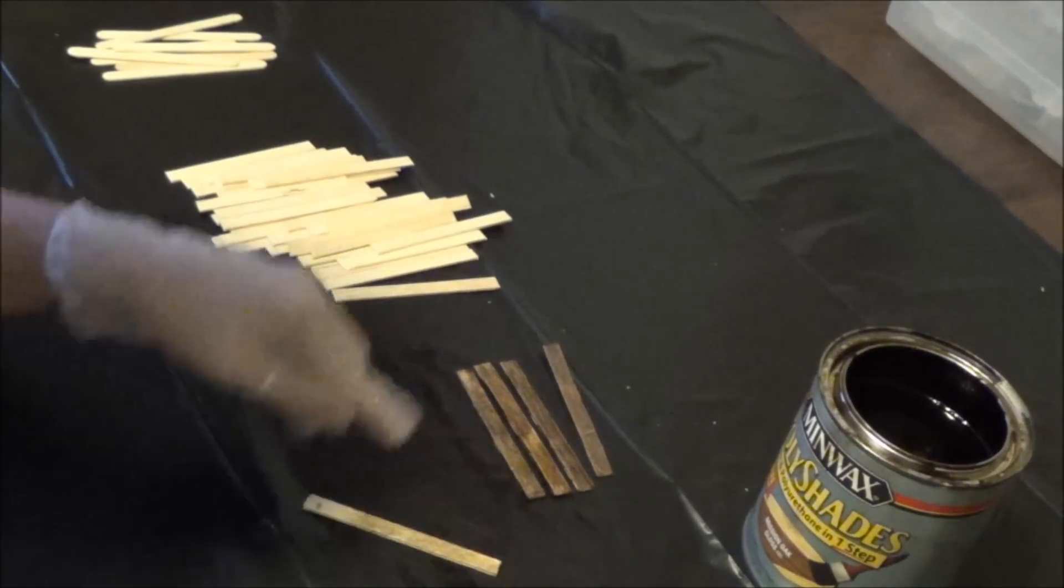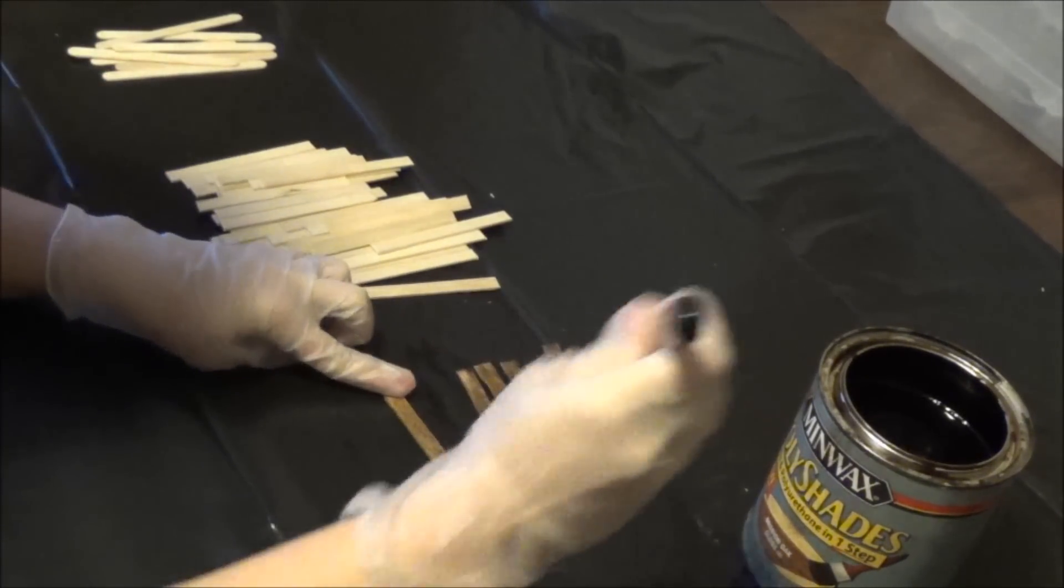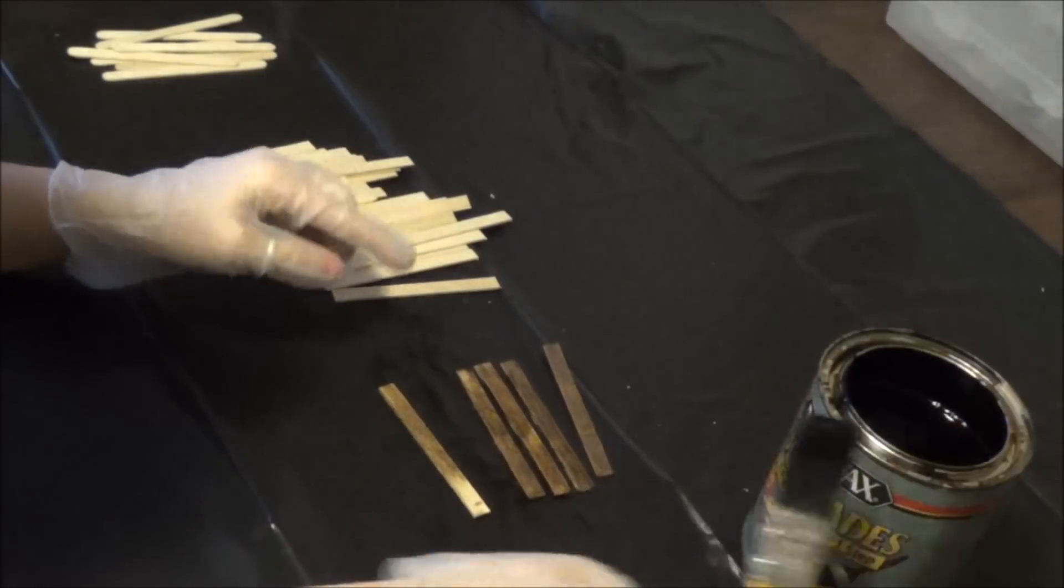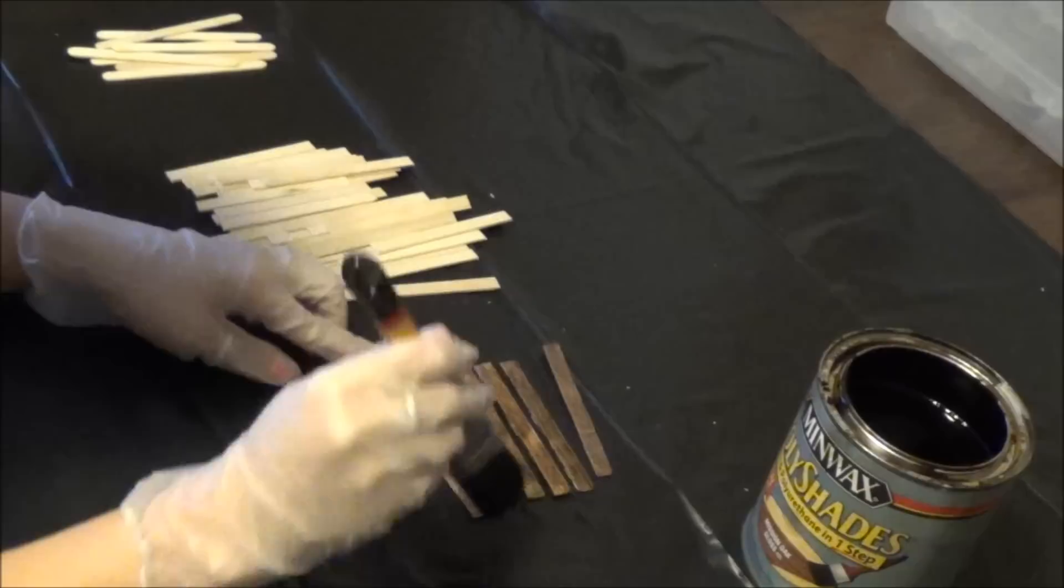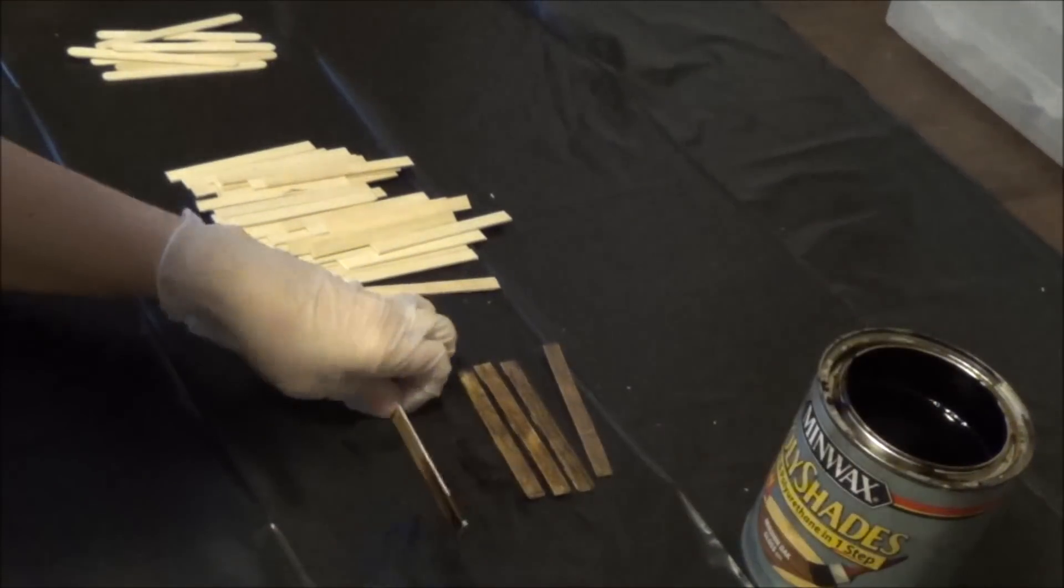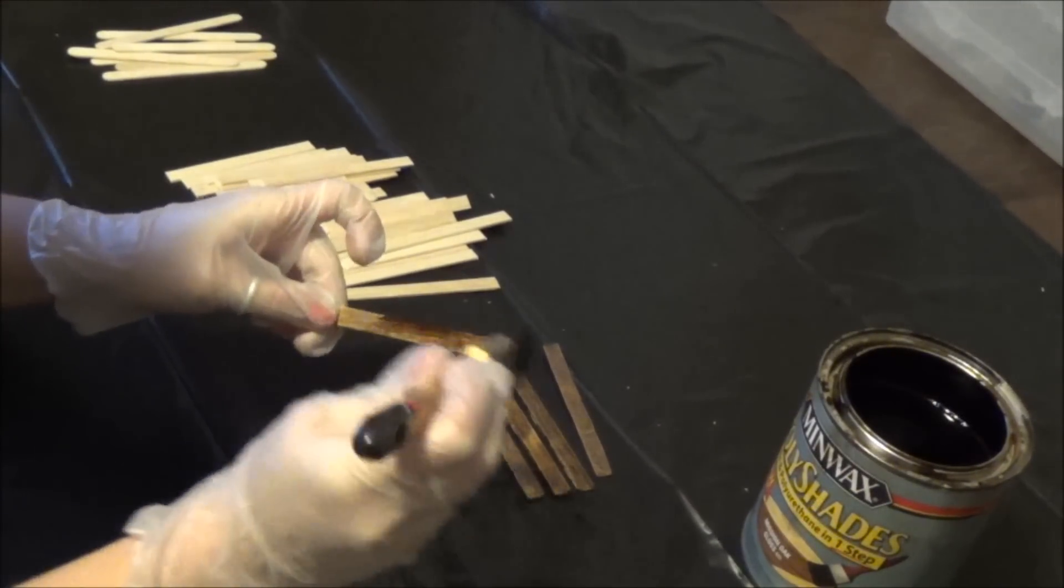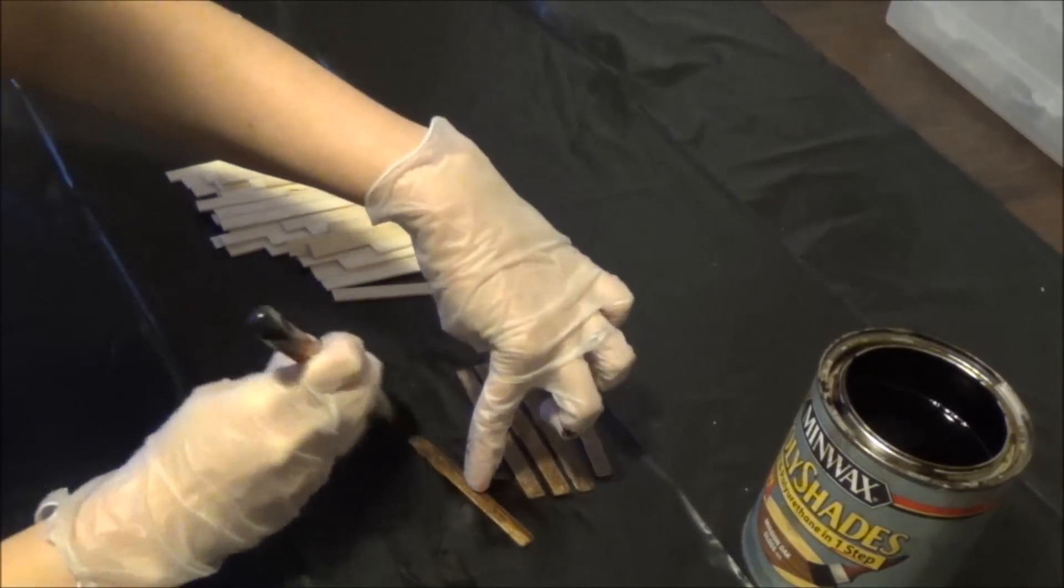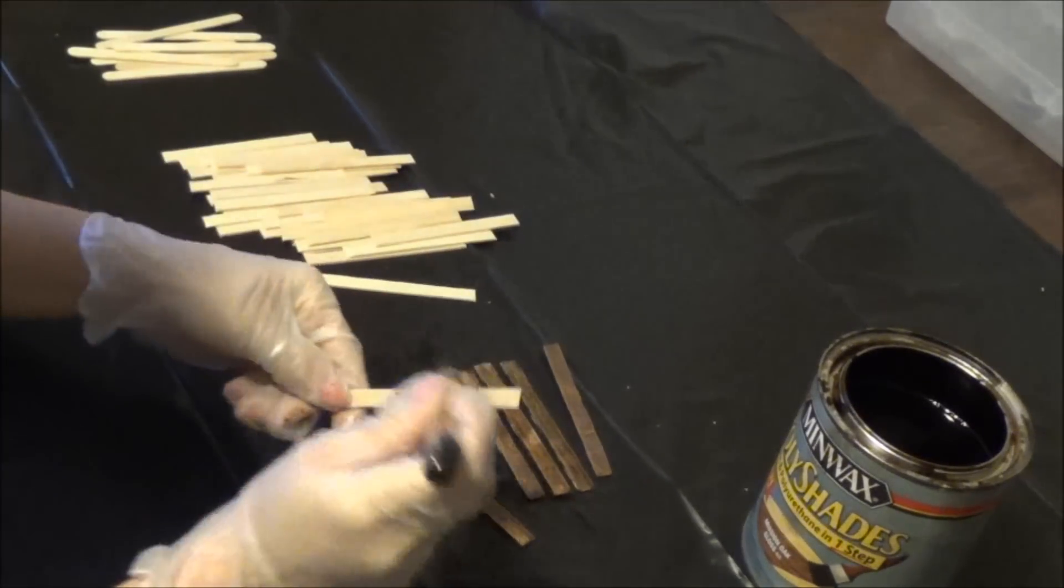The next step is to start staining the popsicle sticks. The idea is you don't want to necessarily paint them—like see how dark that got? We don't want to make them painted. We just want to stain them so they're not that nice, beautiful, bright color.